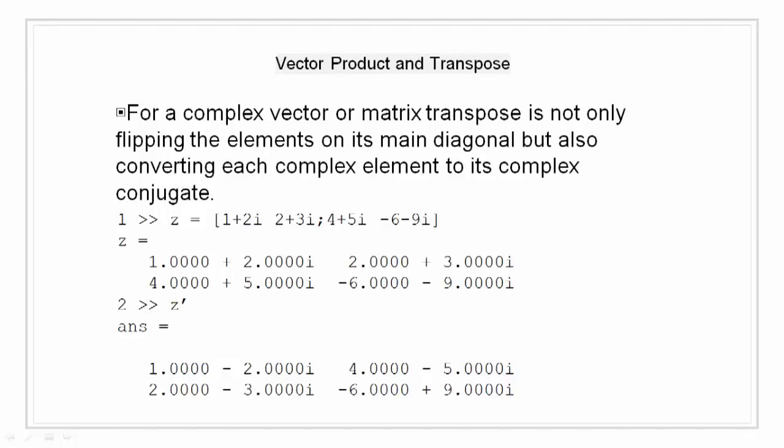As you can see, the sign of 1 plus 2i becomes 1 minus 2i. That of 2 plus 3i becomes 2 minus 3i. That of 4 plus 5i becomes 4 minus 5i. And minus 6 minus 9i becomes minus 6 plus 9i.